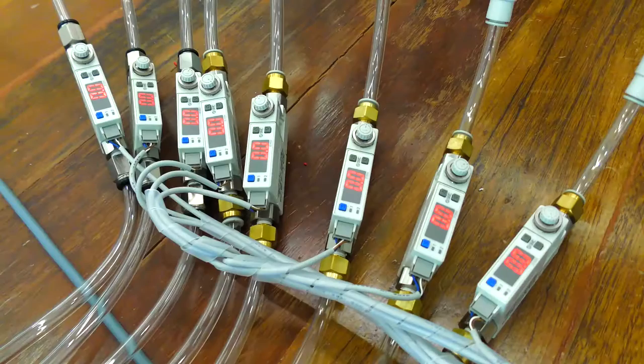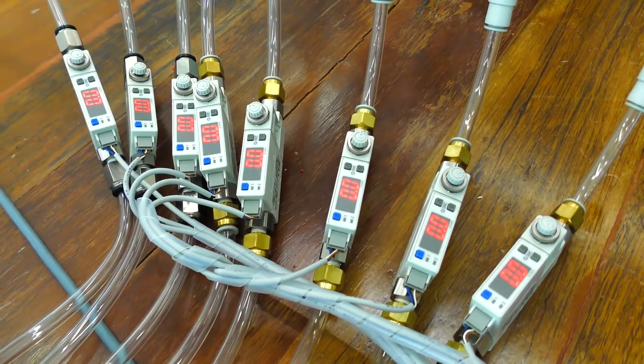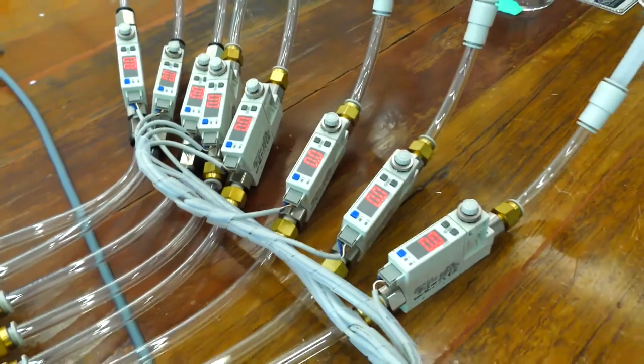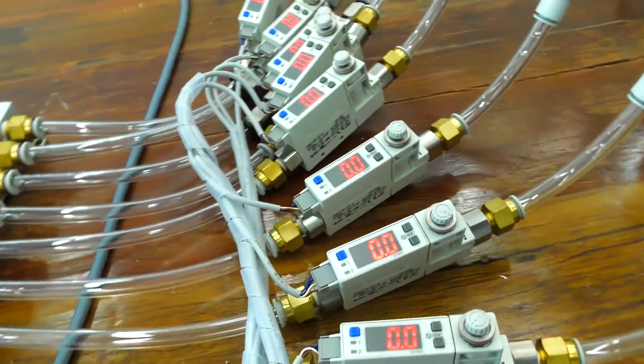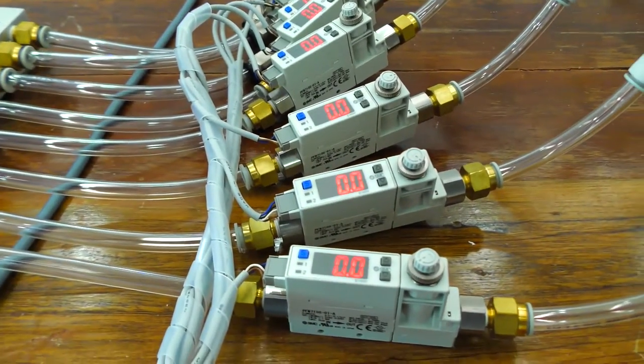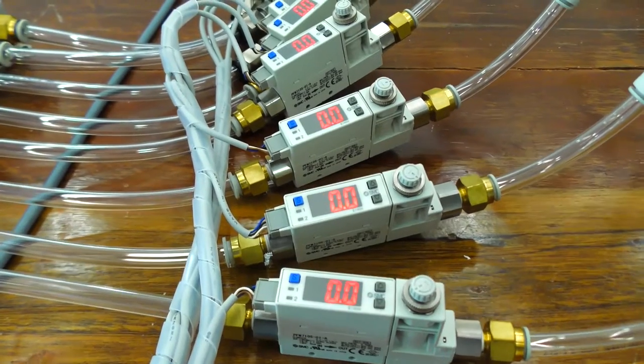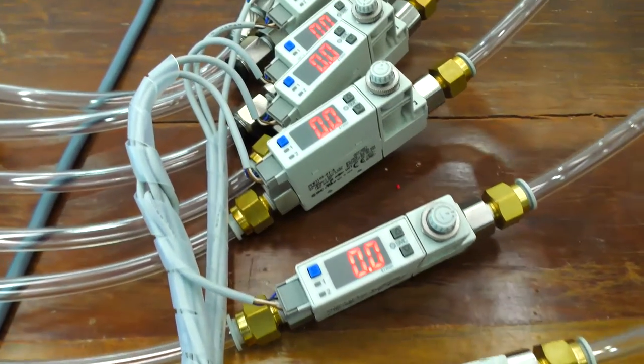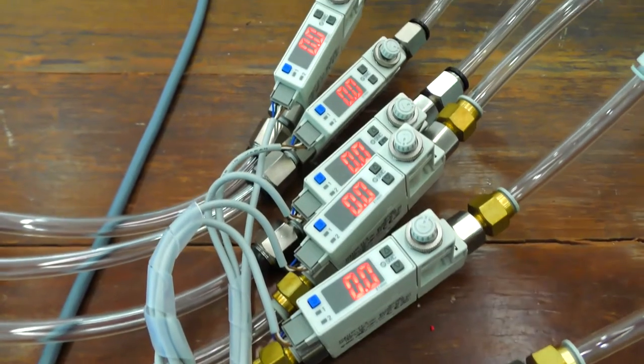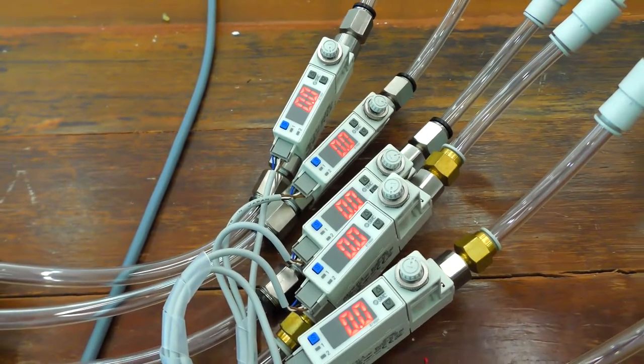From the manifold, it consists of one input and eight outputs where the output will flow to the two-color digital flow switch. We must make sure that the flow rate here must be between 3 to 5 liters per minute, to make sure that our nose is comfortable. Because more than 5 liters per minute, it will make our nose discomfort.